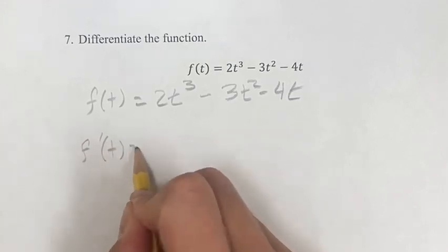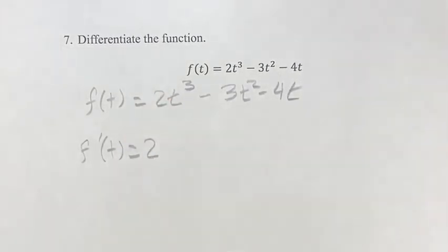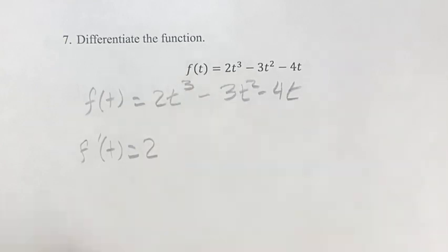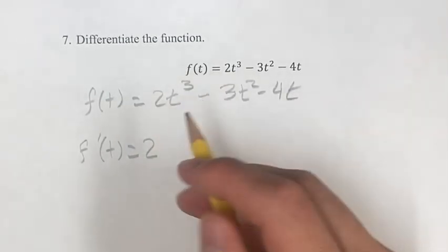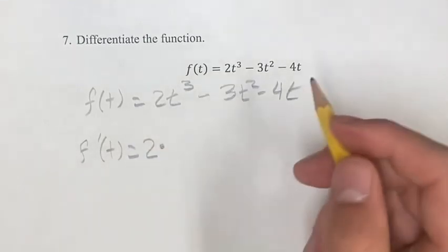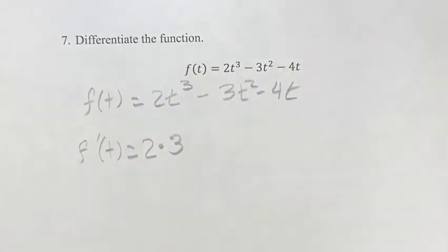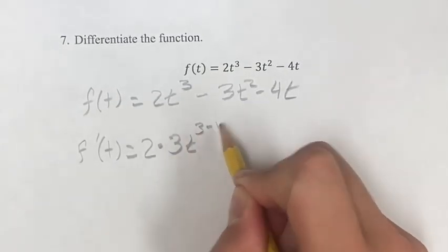In the derivative, you get rid of the constant first, put that out front, take the exponent of t, of whatever your variable is, you bring it down, and multiply it rather for the coefficient. So bring the 3 down, and then your new exponent is 3 minus 1.